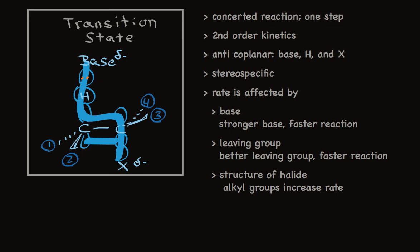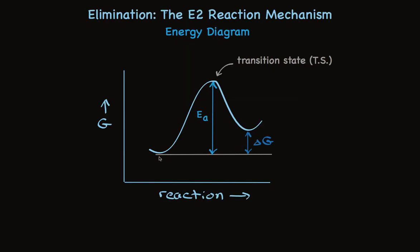As you expect, the energy diagram for this reaction has a single hump. We have an alkyl halide at the beginning. We have an alkene at the end. And energetically, the alkene is higher energy than the alkyl halide. This makes sense. The alkyl halide has two sigma bonds. We're breaking those and replacing them with one weaker pi bond. The activation energy for this single step is affected by how strong the base is, how good the leaving group is, and how stable the structure is that we're forming. Because that determines how stable the transition state is.